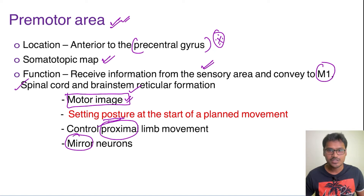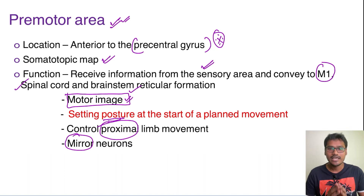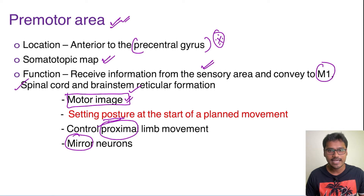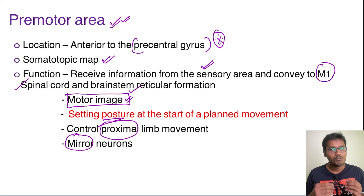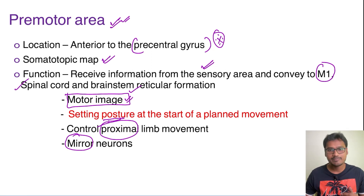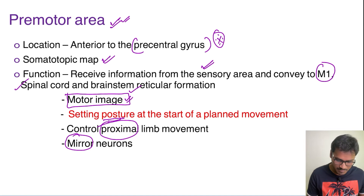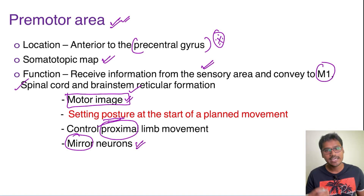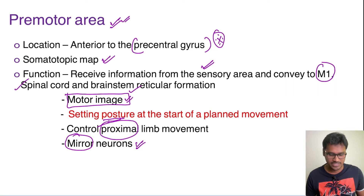The premotor area also contains mirror neurons. These neurons are very important for both humans and lower animals. When we observe someone performing an action, we tend to repeat and learn it — most of our learning skills are acquired this way. Mirror neurons are specifically present in the premotor area and help us learn new skills by imitation.